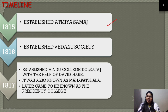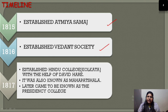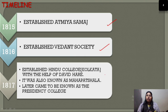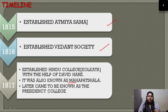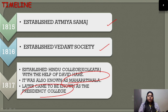Raja Ram Mohan Roy established an organization in 1815. In 1816, he established the Vedant Society. In 1817, he established the Hindu College with David Hare, which later became known as Mahapathshala and subsequently as Presidency College.